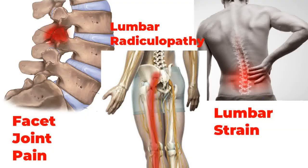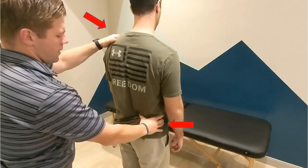The Kemp test, or extension quadrant or facet loading test, is used to evaluate for facet joint pain, lumbar strain, and radicular back pain, among others. The examiner places one hand on the patient's spine and the other on the contralateral shoulder.